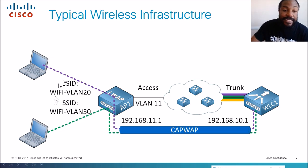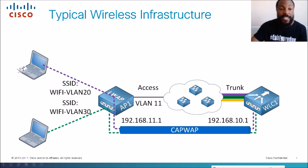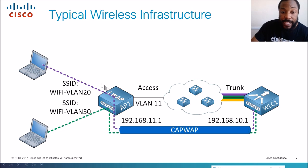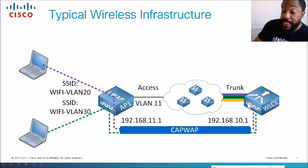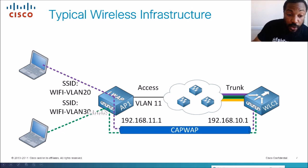When devices in different VLANs need to talk to each other, they use the CAPWAP tunnel — Controlling and Provisioning of Wireless Access Points. If a laptop in VLAN 20 wants to talk to a laptop in VLAN 30, it goes to the access point, through the CAPWAP tunnel to the wireless controller. The wireless controller has access to all VLANs through the trunk, manages the VLANs, and sends the traffic through to VLAN 30. The wireless controller is essentially a Layer 2 device.